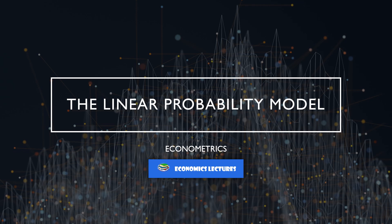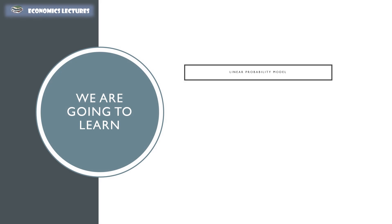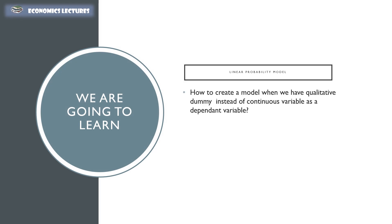Welcome to Economics Lectures. Today we are going to discuss the linear probability models. We are going to learn two things here: the first is we are going to create a model where we use a qualitative variable instead of a continuous variable as a dependent variable, and then we are going to study the problems that are associated with this linear probability model.